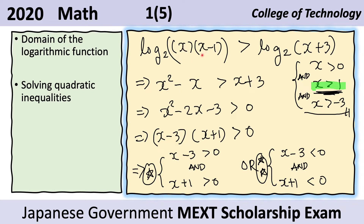We multiply this out to get x squared minus x on the left and x plus three on the right. Then we move x plus three to the other side of the inequality and obtain a new inequality.